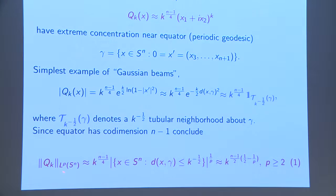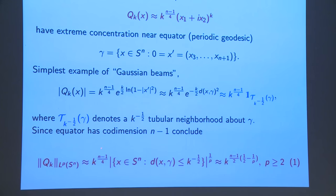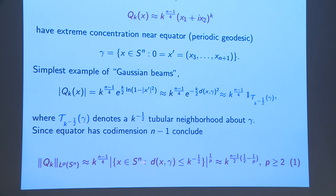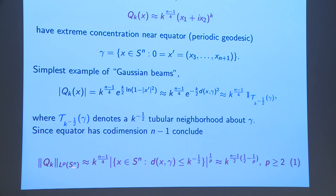You can compute the LP norm of the Gaussian beam. You have the normalizing factor out front, and computing the LP norm gives the volume of the tube to the power 1/p, which is k^{(n−1)/2 · (−1/p)}. So the LP norms of these guys are on the nose comparable to this, and this works for all p ≥ 2. So they have bad LP norms.